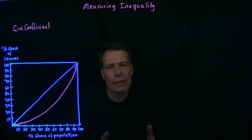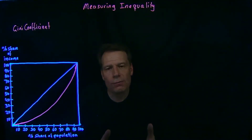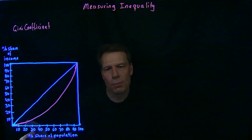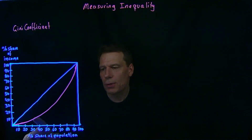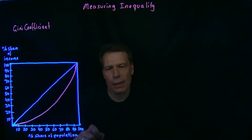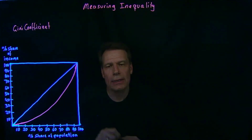So if a country's income distribution is represented by this curve, we could read from that curve that the lowest 10% of the income distribution earns about 1 or 2% of total income. The lowest 20% earns about 3 or 4% of total income. The lowest 30% earns about 9 or 10% of total income, all the way up to the 100th percentile, where by definition 100% of the population earns 100% of the total income in the economy.